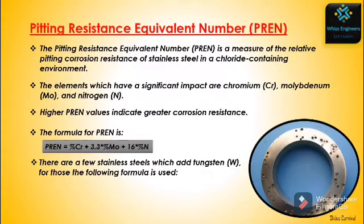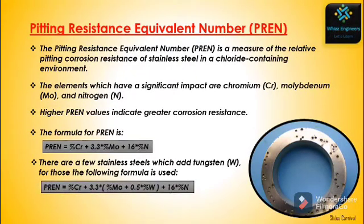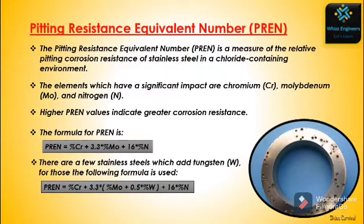For stainless steels which add tungsten, the following formula is used: PREN = % Cr + 3.3 × (% Mo + 0.5 × % W) + 16 × % N.